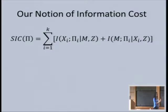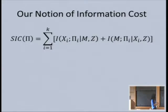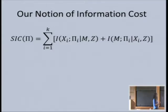Here is the notion of information cost we're going to use—similar to before but tied to this particular distribution. We sum over all players: what the coordinator learns about this player's input from its interactions with that player given M—which we think of the coordinator as having—and given Z, which we condition on throughout. Plus what the player learns about the modes of the coordinates from its interactions with the coordinator, given its input and Z. Here Z are the names of the special players, and M is the mode.